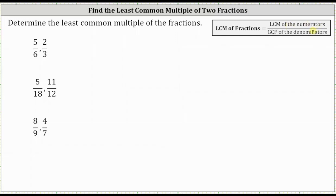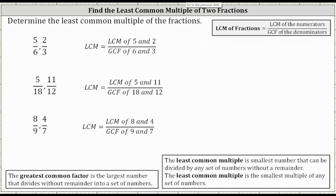Let's look at some examples. We want to find the least common multiple of each pair of fractions. To find the least common multiple of 5/6 and 2/3, we need to find the fraction where the denominator is the greatest common factor of six and three, and the numerator is the least common multiple of five and two.